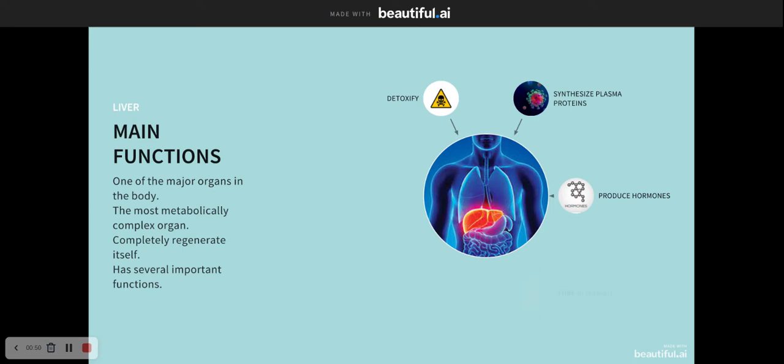The liver stores glycogen and excretes bilirubin, a brownish-yellow substance found in bile produced when the liver breaks down old red blood cells. It also produces bile, the necessary biochemical for digestion that digests fatty foods.